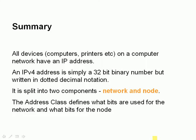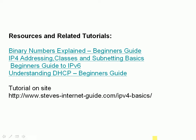A quick summary: all devices on a computer network have an IP address. An IPv4 address is a 32-bit binary number written in dotted decimal notation, split into two components — a network and a node. The address class defines which bits are used for the network and which for the node. Some resources are available on the site — the IP version 4 basics tutorial has links to each of these. If you have any comments, leave them below. If you liked the video, use the like button, and subscribe to the channel to be notified of new videos. Until next time, bye.